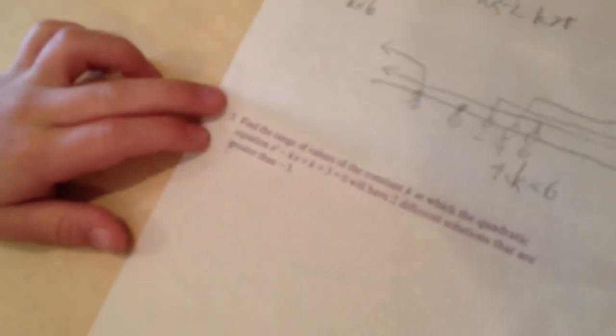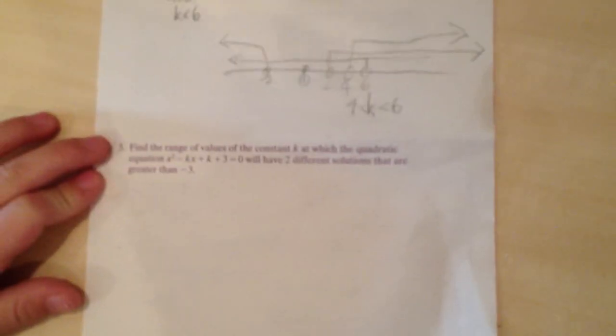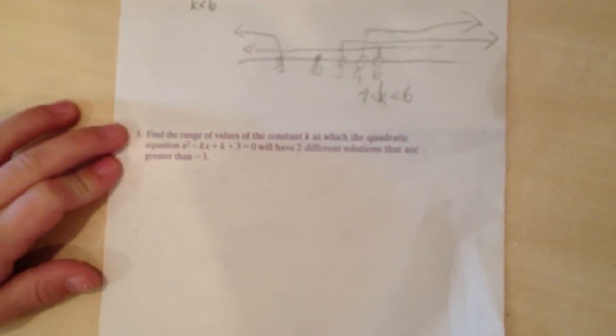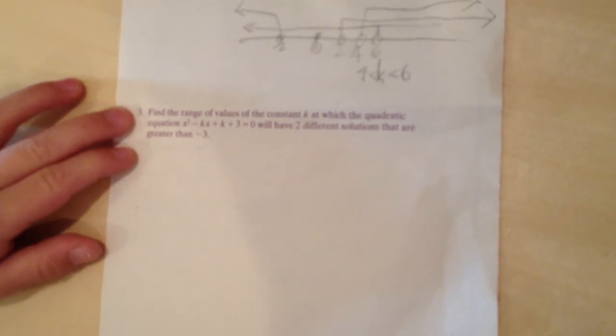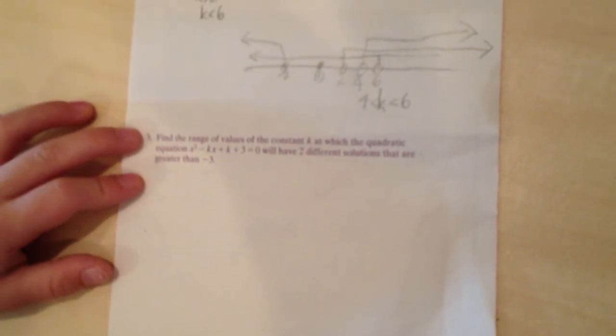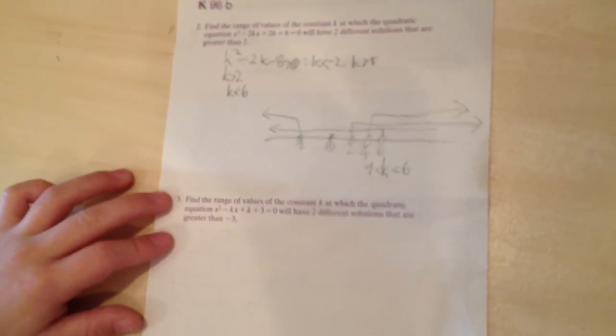Find the range of values of the constant k at which the quadratic equation x squared minus kx plus k plus 3 equals 0 will have two different solutions that are greater than negative 3.